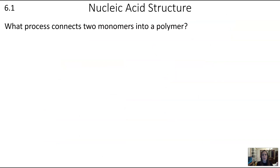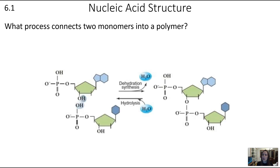Let's review: what is the name of the process that connects monomers into a polymer? The monomers here are nucleotides, and we're building them into the polymer of nucleic acids — either RNA or DNA. That process is called dehydration synthesis, where multiple monomers come together, we lose a water molecule, a covalent bond forms, and we get one larger molecule. Do that enough and you get a really long strand.